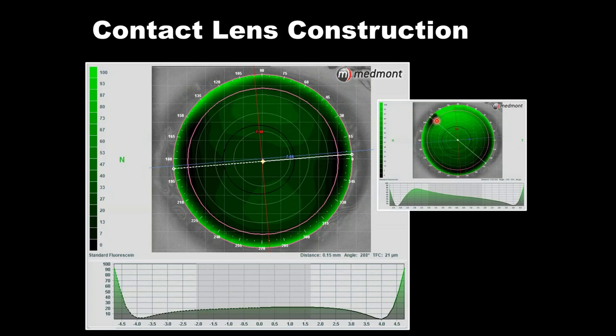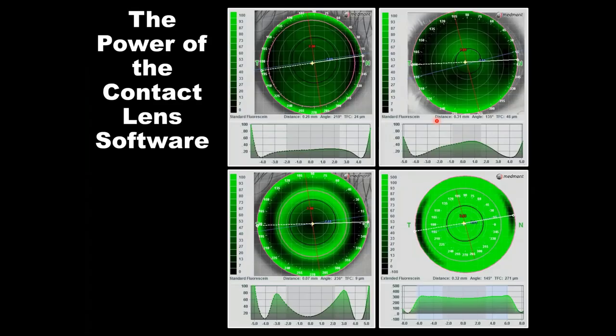One consideration: the editing option can only be used with a single topography. It can't be used with the composite capture. So if you're dealing with a single topography that has error, edit that first before making your composite.